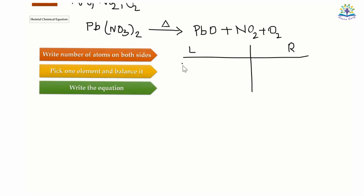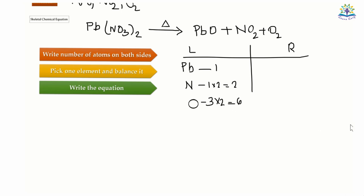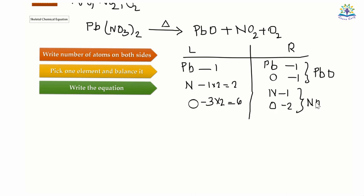Now let's take the number of atoms on the left and right. On the left side: there is one atom of lead, two atoms of nitrogen, and six atoms of oxygen. Here you have to multiply the value outside the bracket with its subscript. On the right side: we have one atom of lead, one plus two plus two — five atoms of oxygen — and one atom of nitrogen.